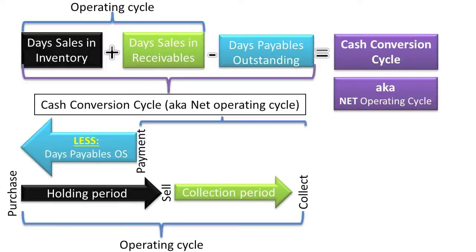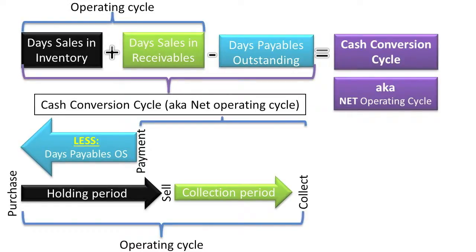Please take a moment and study the following diagram, which should help summarize the cash conversion cycle for you. Up at the top is the computation of the cash conversion cycle, and down below is more of a visual representation of what the cash conversion cycle actually means. By now you should be able to define, compute, and interpret the operating cycle, the net operating cycle — also known as the cash conversion cycle — the days payables outstanding, and be able to solve for unknown variables in the cash conversion cycle.